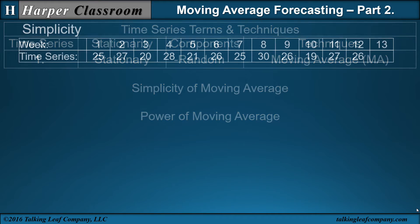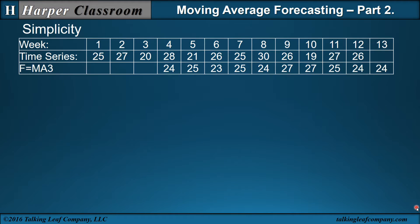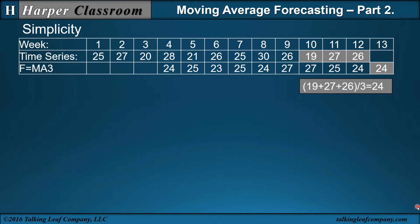First, the simplicity. We take a weekly time series and apply a three-point moving average. We simply take any three contiguous values and average them, and that's the forecast for the very next time period. So if I average time periods 1, 2, 3, that's the forecast for time period 4. Then I move to the next three: the average of 2, 3, and 4 is the forecast for time period 5. I keep moving down until I get to time period 13, which is the future, and I always average the last three values to forecast the future.